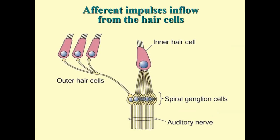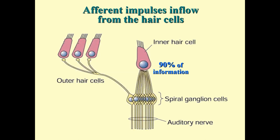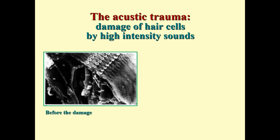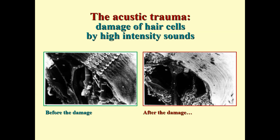Inner hair cells provide about 90% of auditory information to the brain, while outer hair cells may share one fiber among adjacent cells. Efferent fibers go predominantly to outer hair cells, which can influence the sensitivity of inner hair cells through a mechanism not yet fully understood. Very intense sounds can cause acoustic trauma — as seen in electron micrographs comparing normal hair cell cilia with the damage that occurs after exposure to very intense sounds.